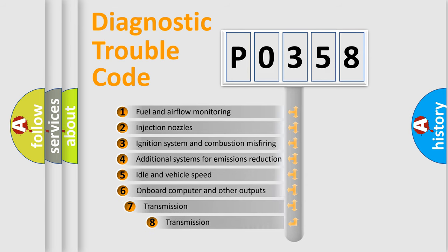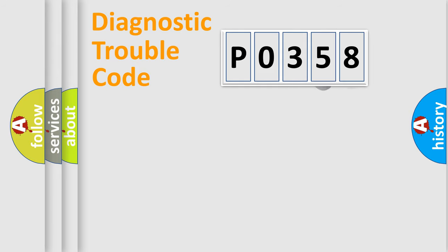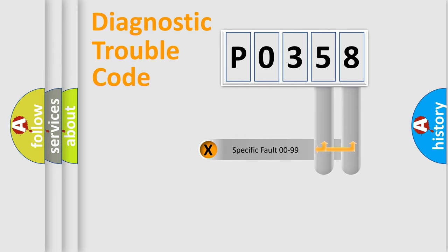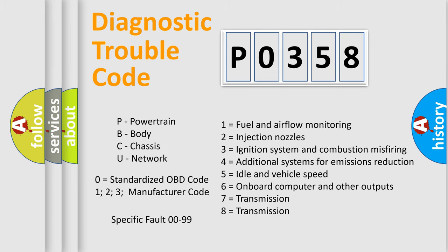The third character specifies a subset of errors. The distribution shown is valid only for the standardized DTC code. Only the last two characters define the specific fault of the group. Such a division is valid only if the second character code is expressed by the number zero.